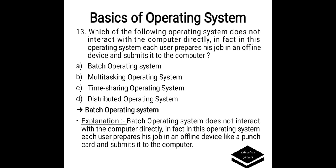Which of the following operating system does not interact with the computer directly? In this operating system, each user prepares his job on an offline device and submits it to the computer. Option A. Batch operating system, B. Multi-tasking operating system, C. Time-sharing operating system, D. Distributed operating system. Correct answer is option A, Batch operating system. Batch operating system does not interact directly with the computer; each user prepares his job on an offline device like a punch card and submits it to the computer.